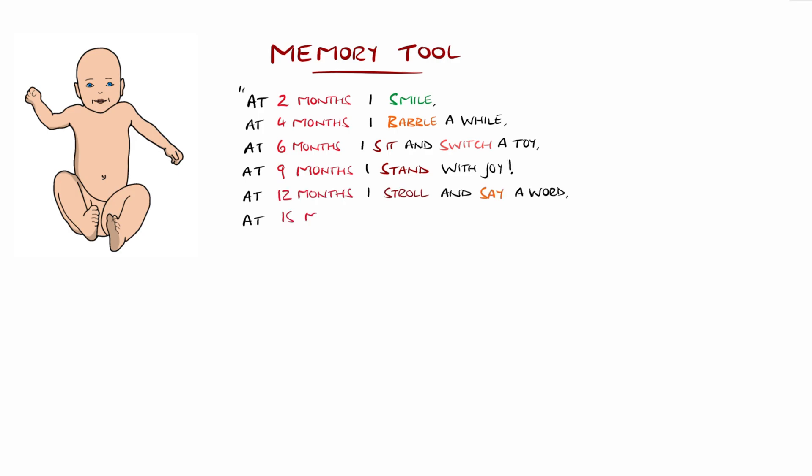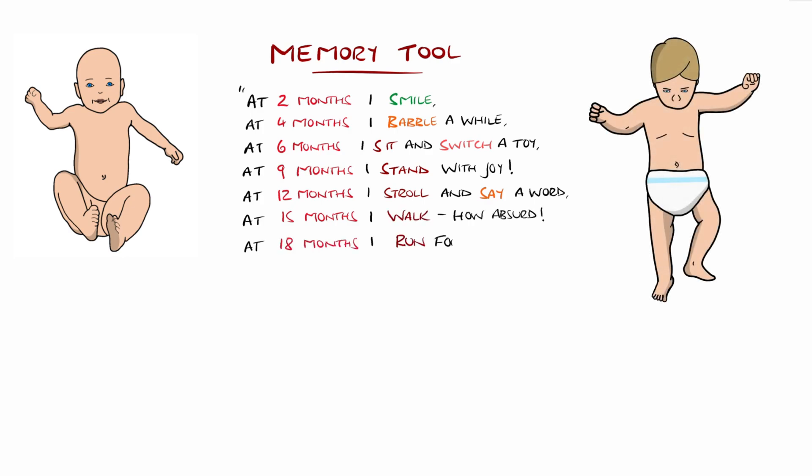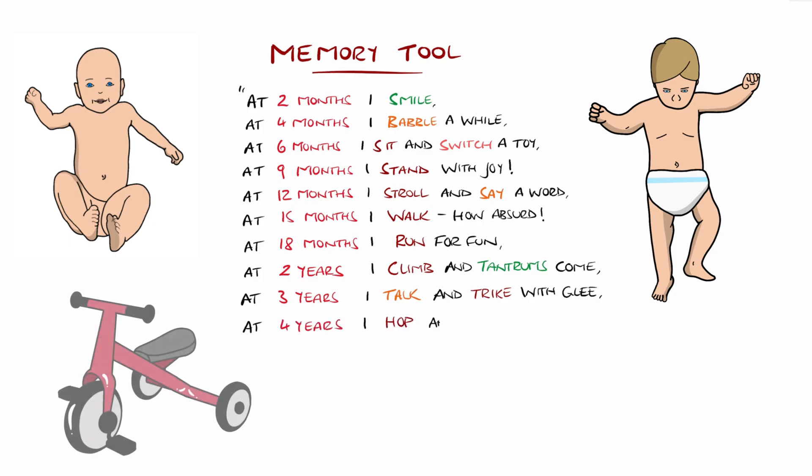At 12 months I stroll and say a word, at 15 I walk how absurd, at 18 months I run for fun, and at two I climb and tantrums come. At three I talk and trike with glee, at four I hop and count to four, at five I skip, read, and so much more.